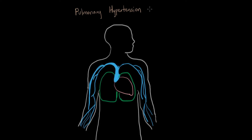For diagnosing pulmonary hypertension, we can actually advance the catheter all the way into the area and directly measure the pressure in the pulmonary artery.